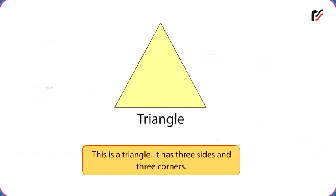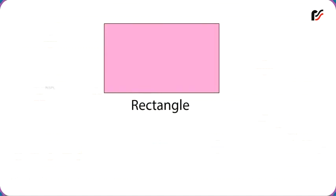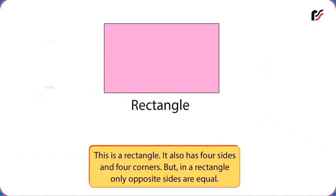Triangle. This is a triangle. It has three sides and three corners. Rectangle. This is a rectangle. It also has four sides and four corners. But in a rectangle, only opposite sides are equal.